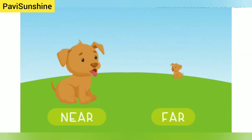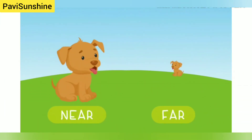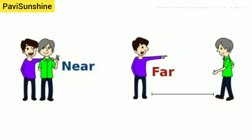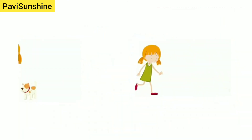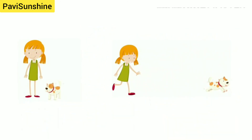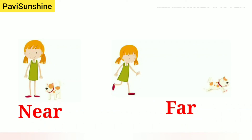Now we have near and far. One puppy is near and other is far. Near, far. One girl is near to her puppy and other is far.